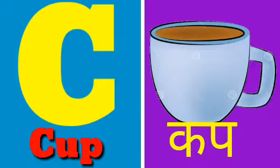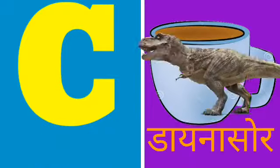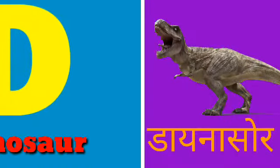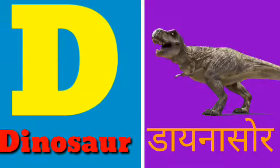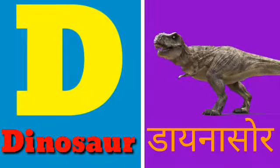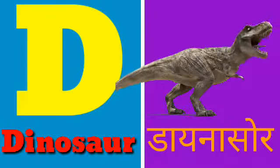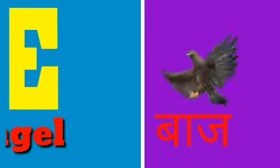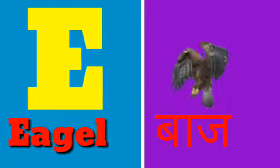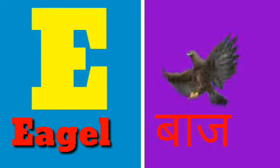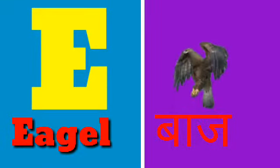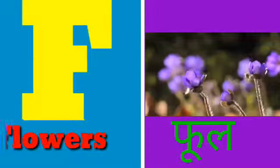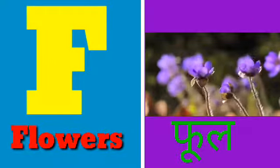C for cup, cup means cup. D for dinosaur, dinosaur means dinosaur. E for eagle, eagle means baaz.